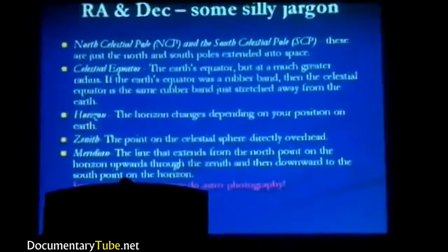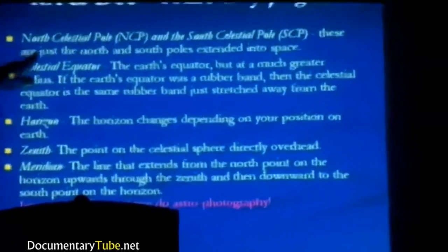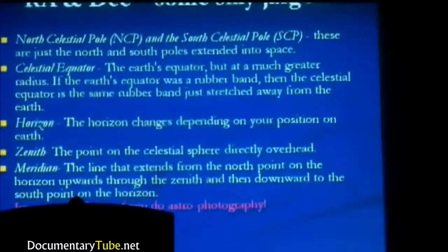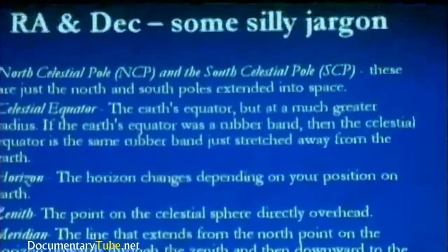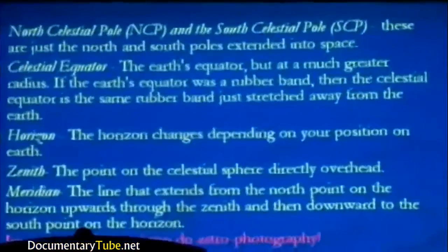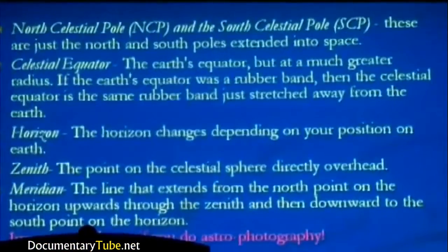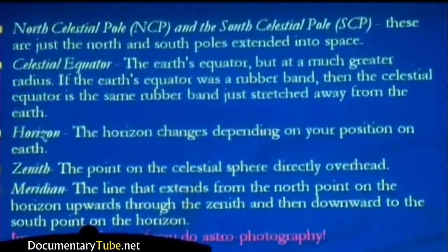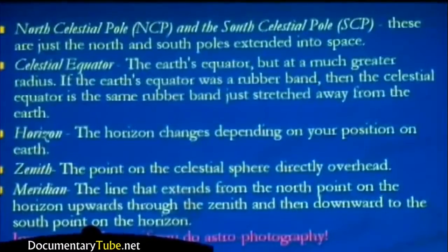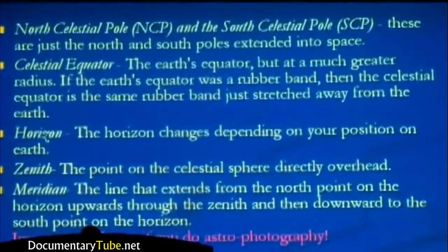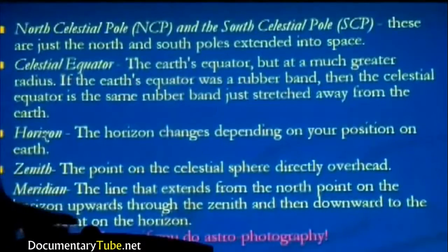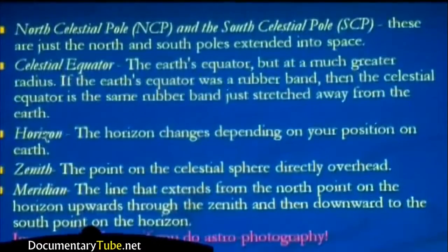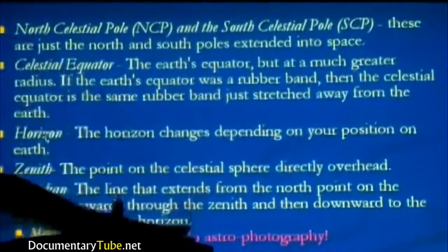Right ascension and declination — some terminology. The North Celestial Pole (NCP) and the South Celestial Pole (SCP) are just the north and south poles extended into space. The Celestial Equator is the Earth's equator at a much greater radius. If the Earth's equator were a rubber band, the Celestial Equator is the same rubber band stretched away from the Earth — a plane slicing through the equator and extending into space. The horizon changes depending on your position on Earth, so stars visible in North America may differ from those visible in Australia.